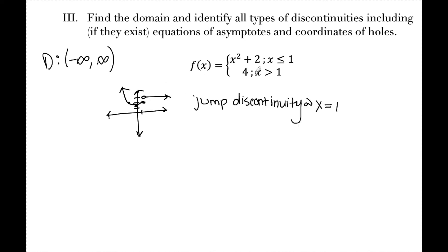We don't have to graph the piecewise function every time. Once we confirm each piece is continuous independently, we just check that the y-values at the boundary are equal. Plugging x=1 gives 3 for the first piece and 4 for the second, so right away we see a jump discontinuity because the function ends at 3 and then starts at 4.